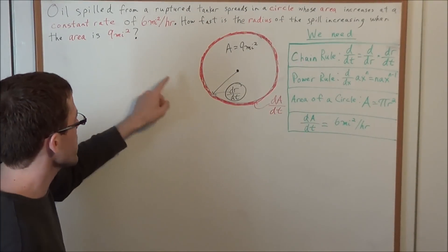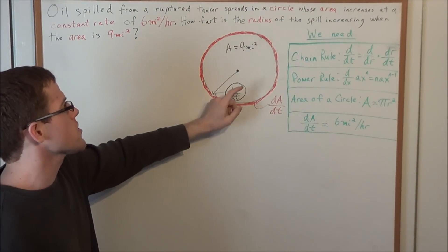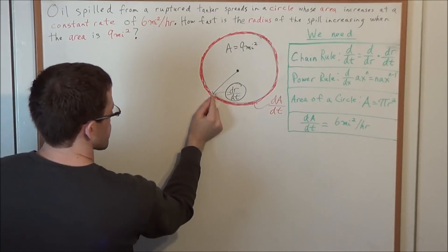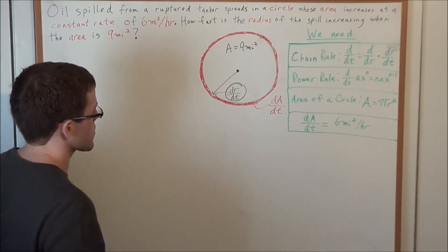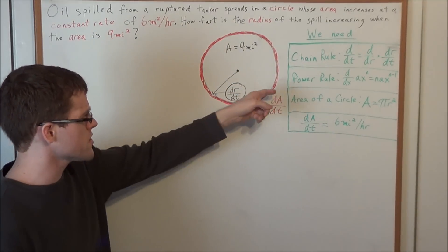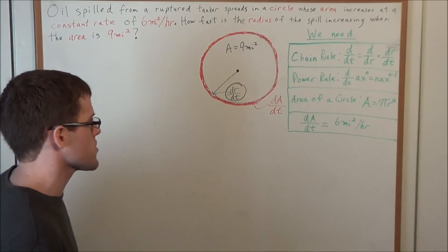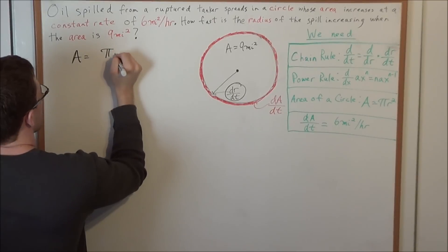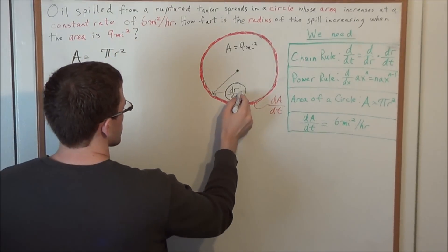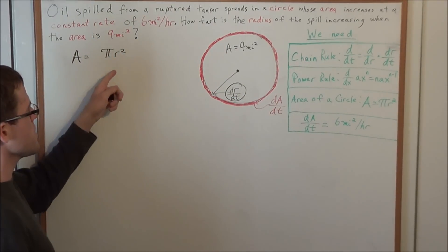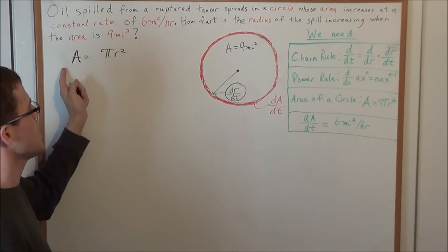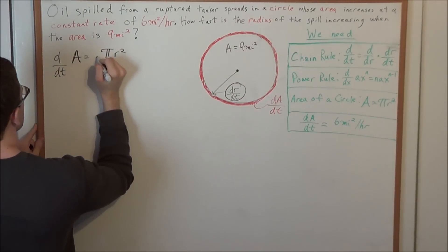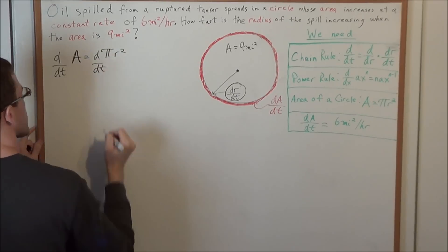What are we trying to find? The radius — the change of the radius with respect to the change in time when this area is 9 miles squared, i.e., how fast is the radius increasing right now. To find this, we need the area of a circle: A = πr². Keeping in mind we want to find dr/dt, we need to take the derivative with respect to time of this equation. So we have d/dt of A equals d/dt of πr².